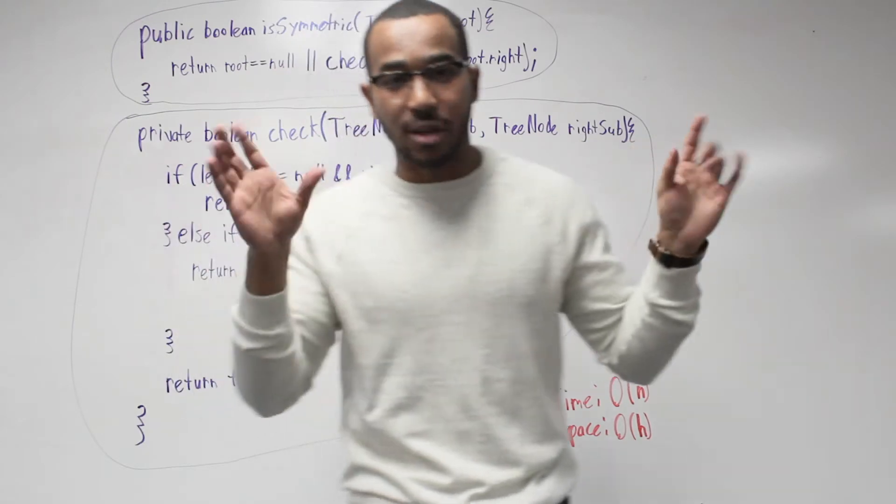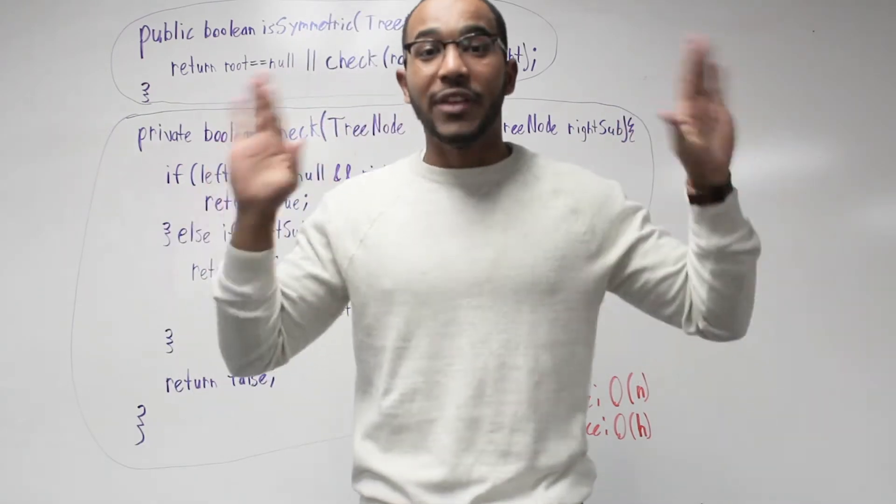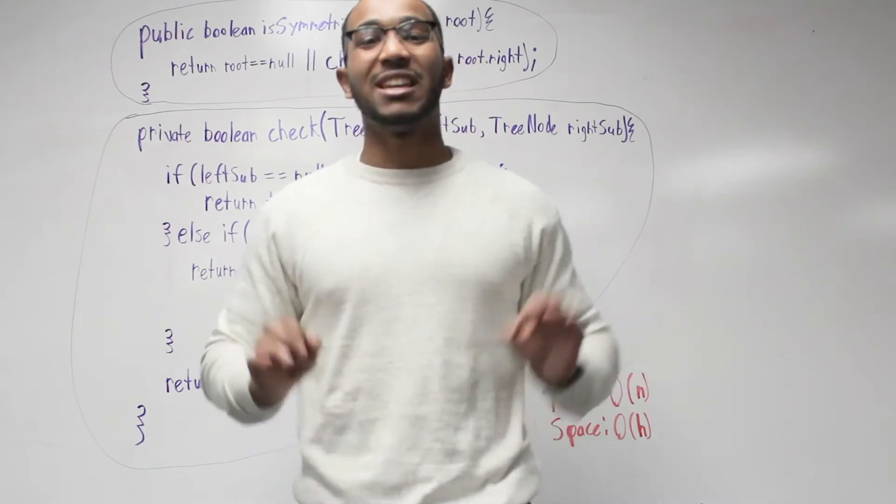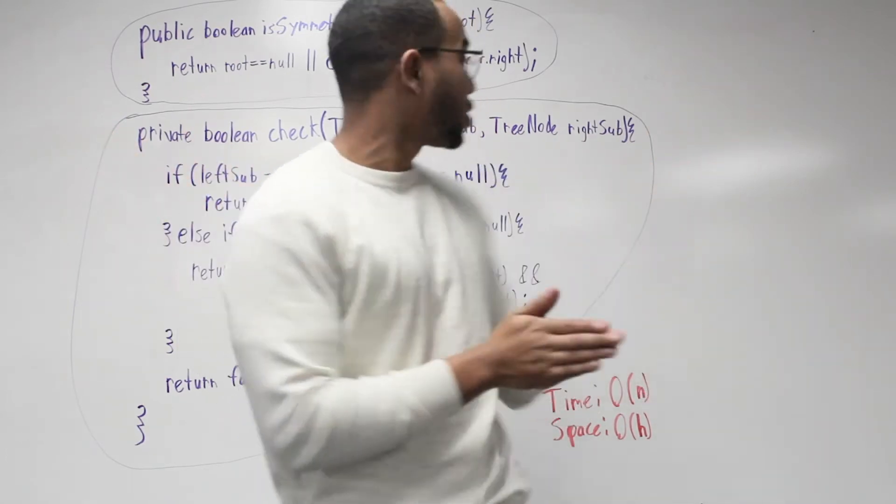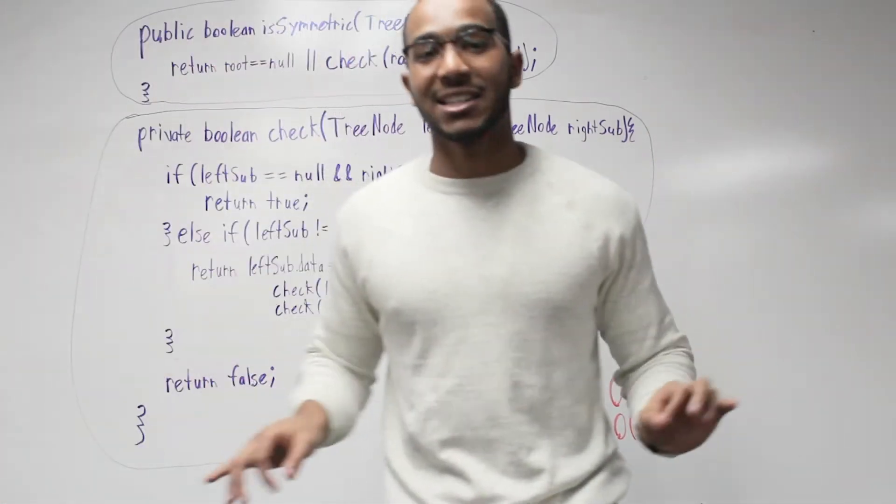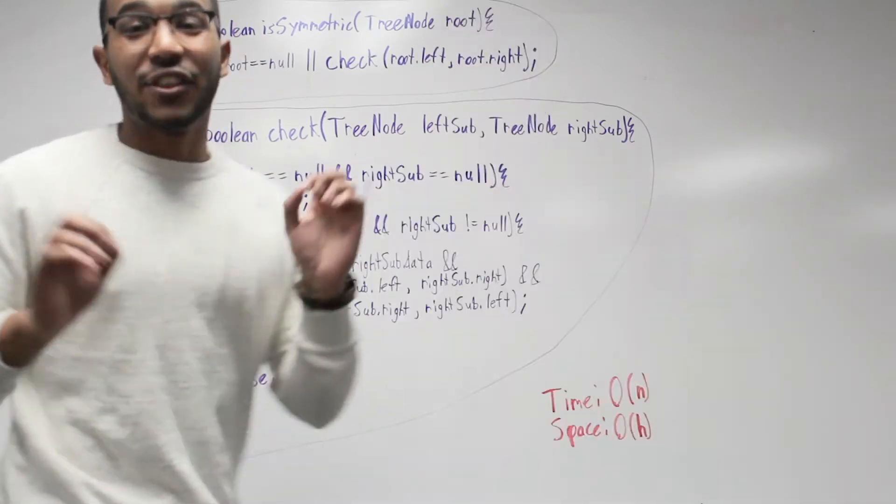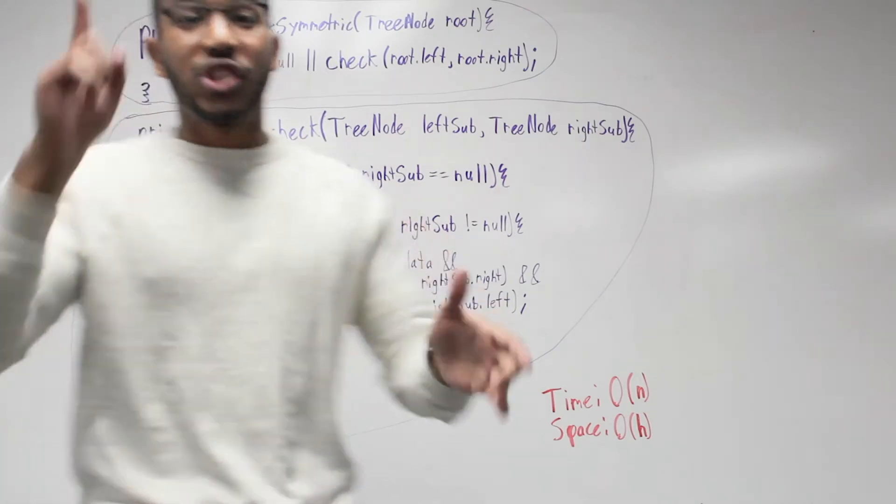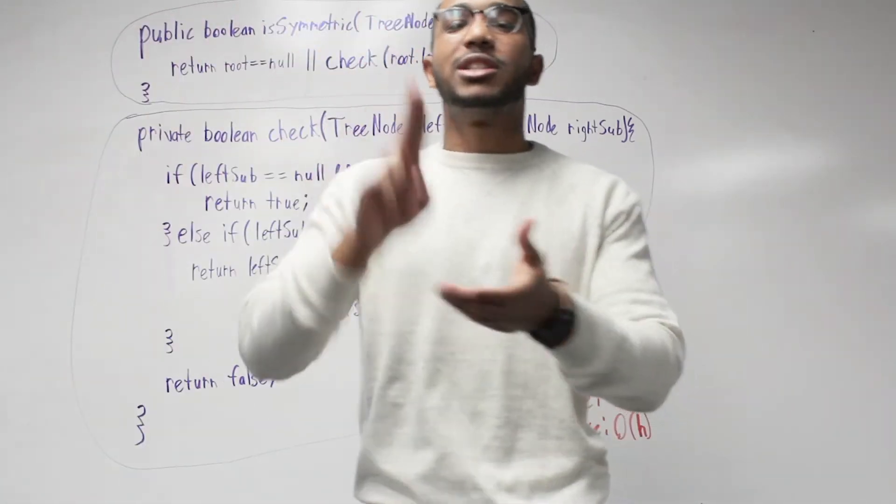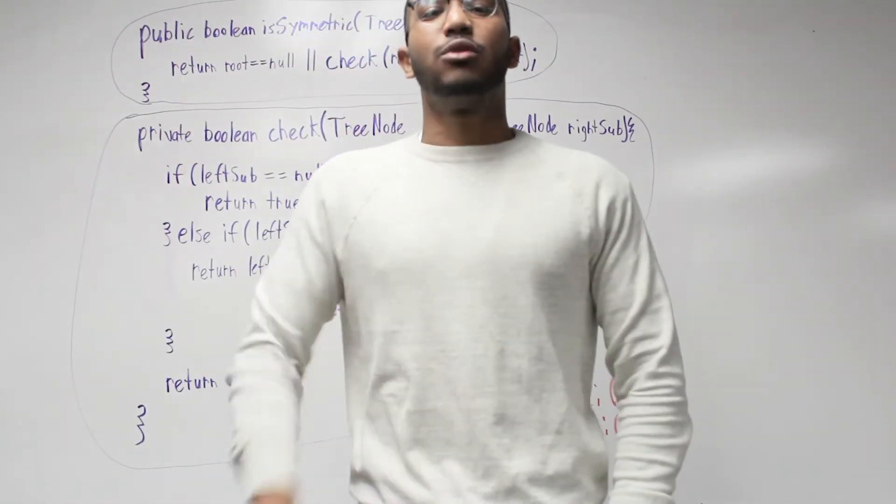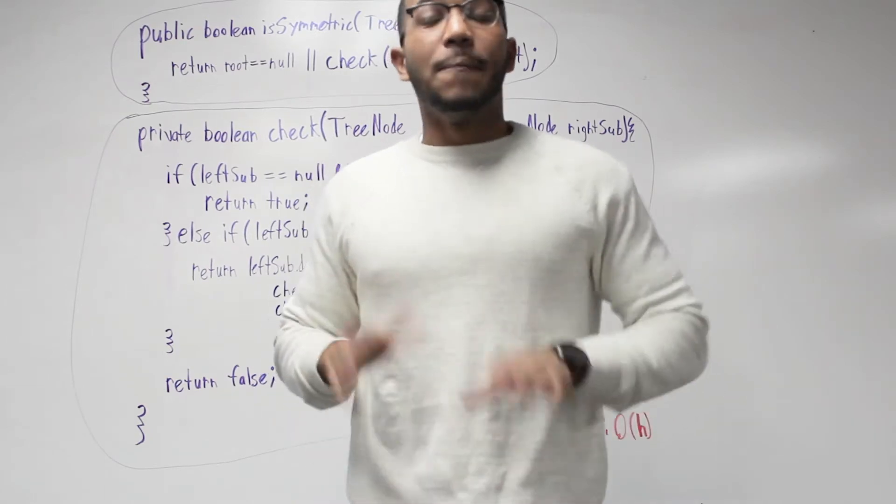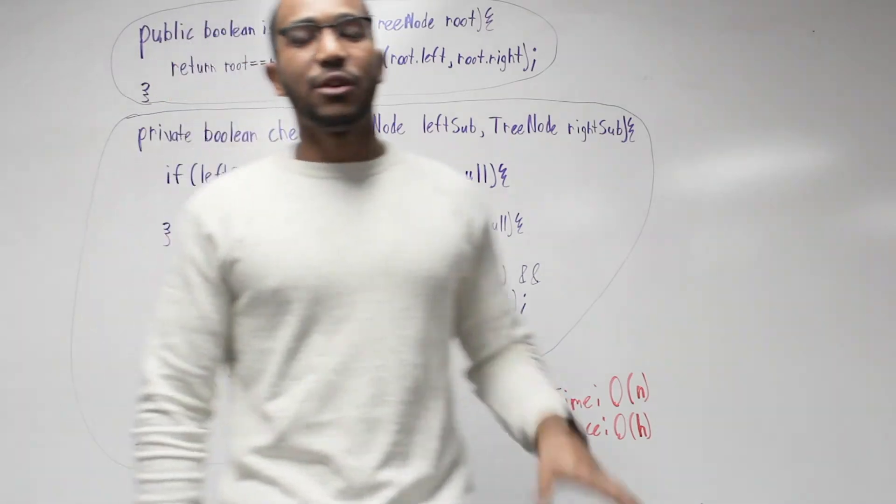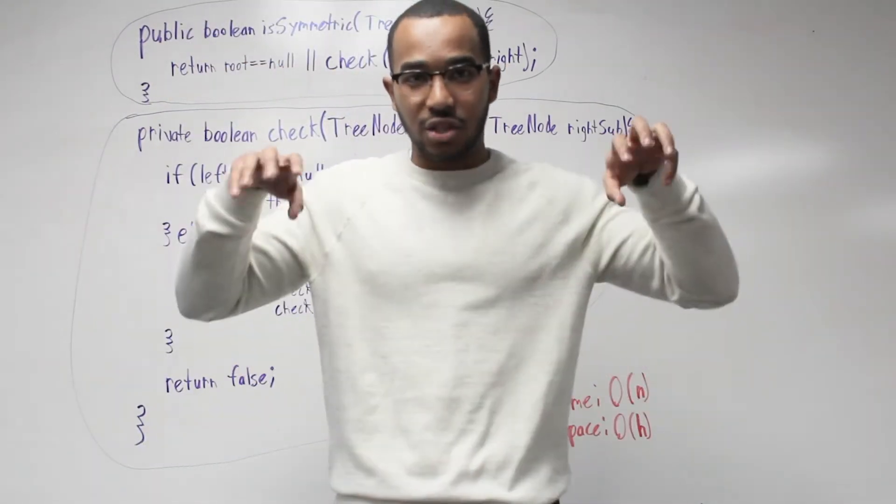Let's get into the recursive code and see how the code pans out now that we've deduced these rules. Here is everything converted to the code. Nothing has changed. All we're doing is converting this to logic. If the root is null, immediately we short circuit execution. It's a symmetric tree. But if it's not null, then we need to go into our recursion and check the left subtree and the right subtree.